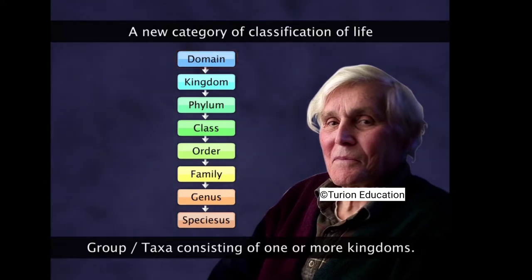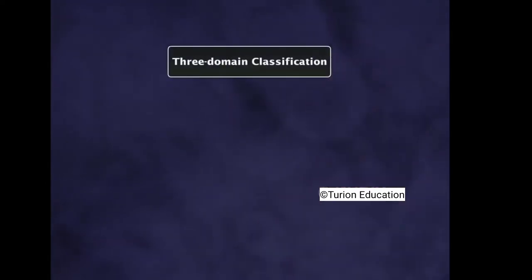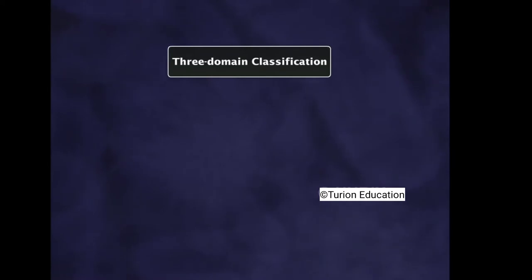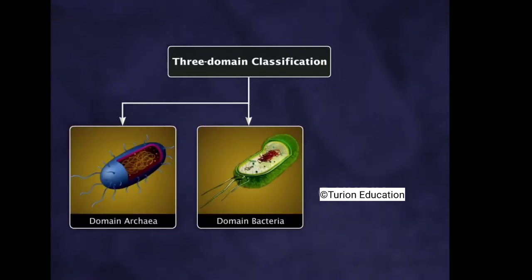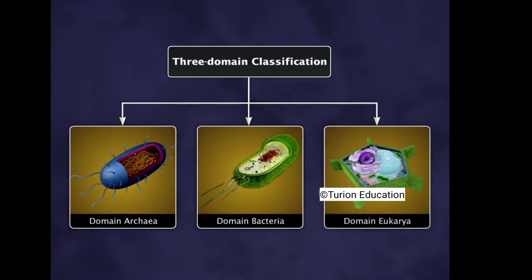A domain means a group or generalized taxa consisting of one or more kingdoms. All living organisms were placed in the three-domain system: Domain Archaea, Domain Bacteria, and Domain Eukarya.